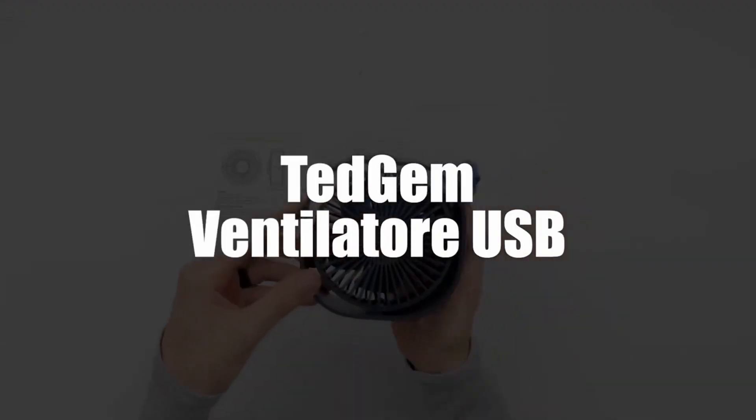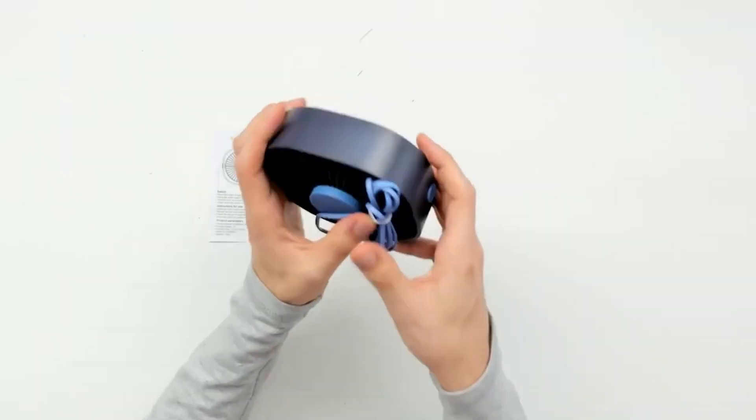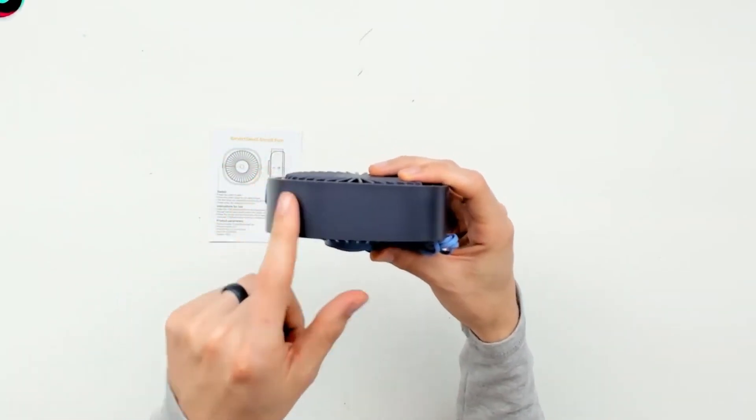In third place, we selected the Tedgem Ventilator USB-USB Ventilator. The Tedgem Ventilator USB is a light, slim device that fits easily in your camping bag without a hitch.